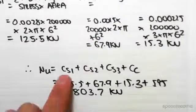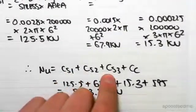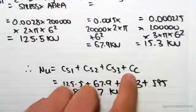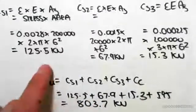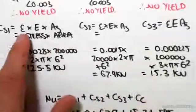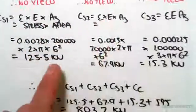which is given by the compression in steel one, plus compression in steel two, plus compression in steel three, plus the compression in the concrete. So we found all these values from before. So there's steel one, steel two, steel three.